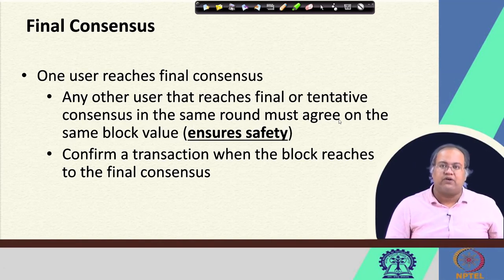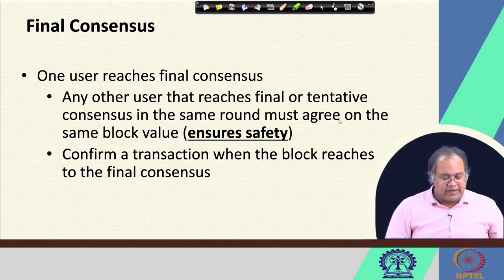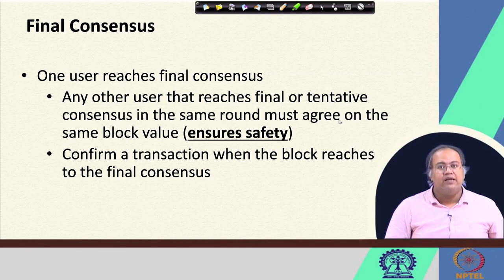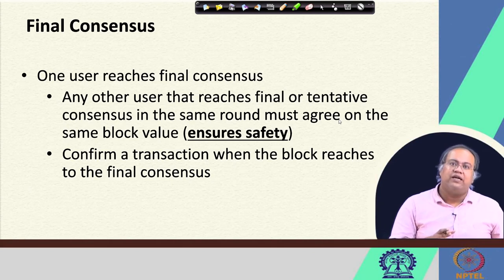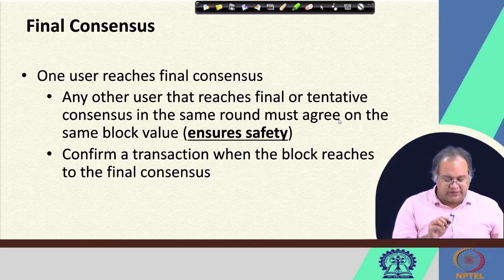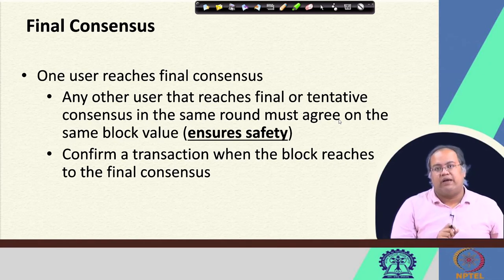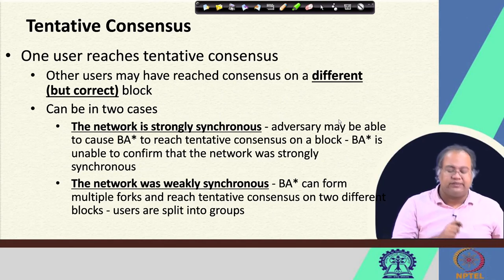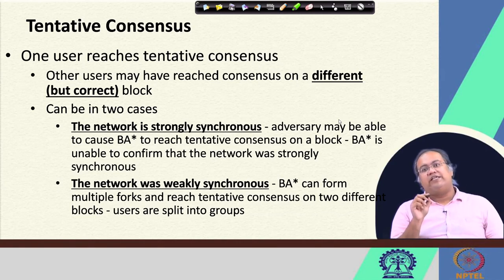There are two phases of consensus: final consensus and tentative consensus. Final consensus says that once one user reaches final consensus, any other user that reaches final or tentative consensus in the same round must agree on the same block value — this ensures the safety of the network, meaning all correct participants agree on the same value and you can commit the block to the blockchain. Tentative consensus means that when one user reaches tentative consensus, other users may have reached consensus on a different block — a scenario similar to a fork.